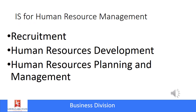A human resources functional application might include tracking recruitment, which includes advertising, finding potential employees, evaluating them, and deciding which ones to hire. It would also cover human resources development, tracking training and certifications, and human resources planning and management — making sure that we have enough people to produce the needed products and services.